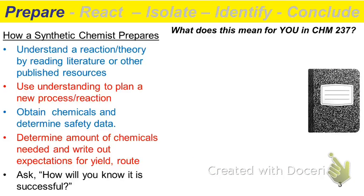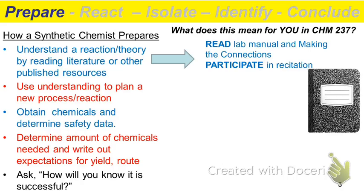As far as preparation goes, a synthetic chemist would evaluate the reaction in theory — going into literature resources, looking things up, finding out how the different mechanisms are working, the roles of chemicals. For you, that means reading the lab manual, reading the Making Connections book for different techniques, and ideally participating in recitation, working on group activities and answering questions.